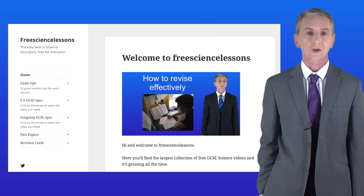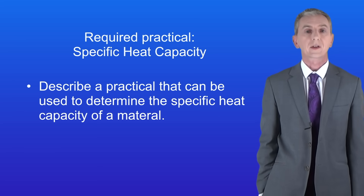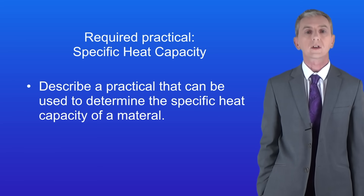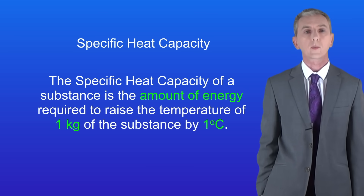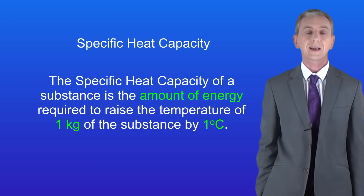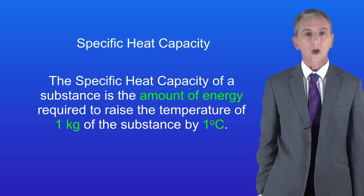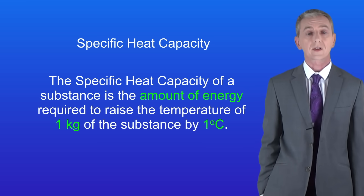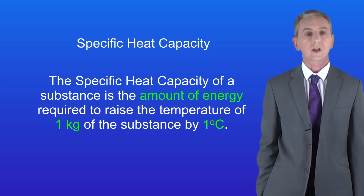Hi and welcome back to freesciencelessons.co.uk. By the end of this video you should be able to describe a practical that can be used to determine the specific heat capacity of a material. In the last video we saw that the specific heat capacity of a substance is the amount of energy required to raise the temperature of one kilogram of the substance by one degree Celsius. This is a required practical so you may well see this in your exam.